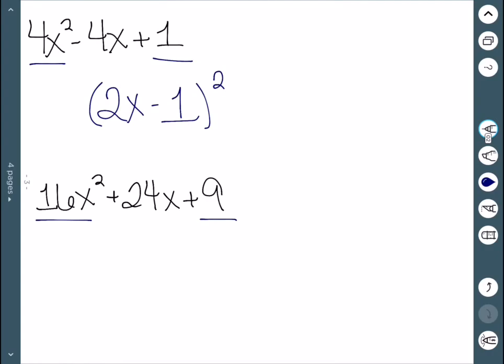The last one, we see that 16 and 9 are both perfect squares, which are 4 and 3. 4 times 3 is 12, times 2 is 24. So this one works. 4x plus 3 squared.